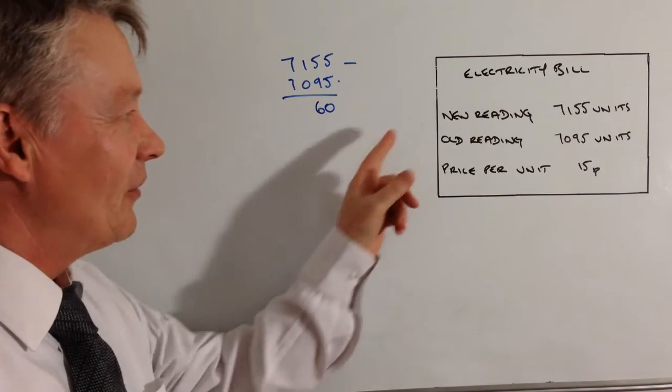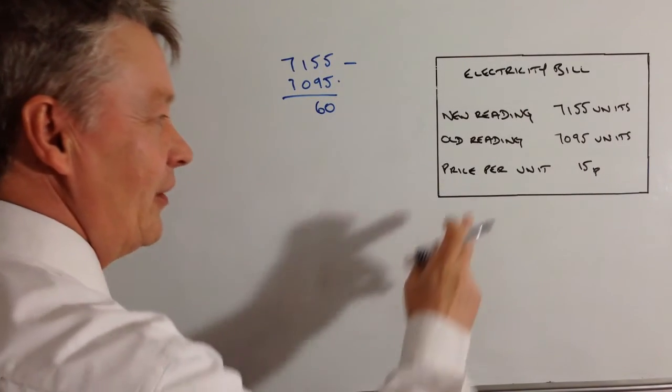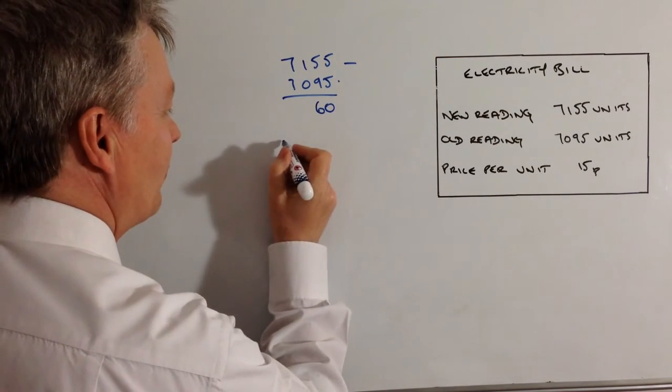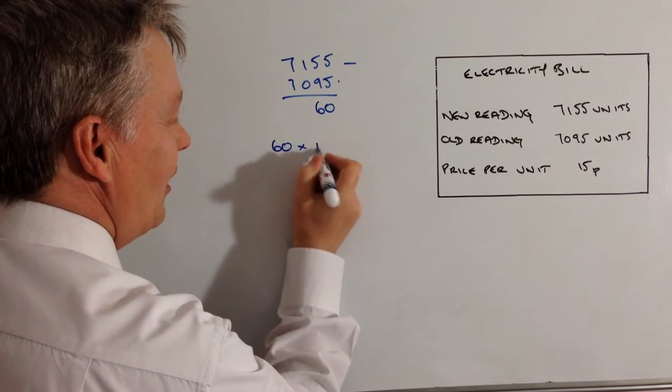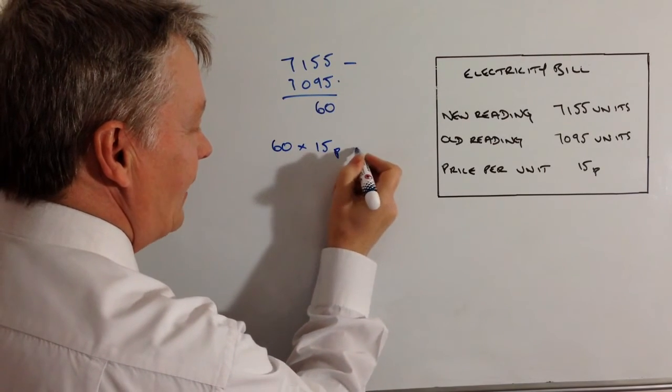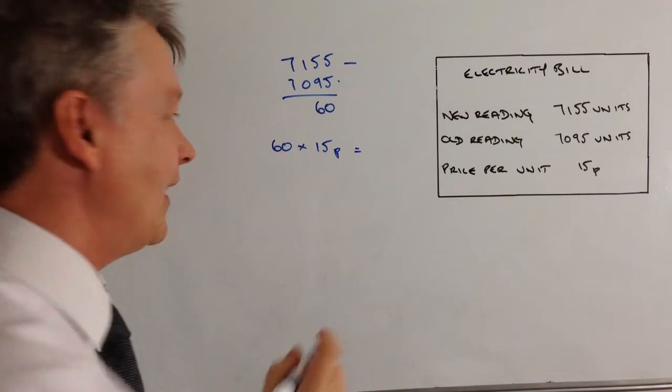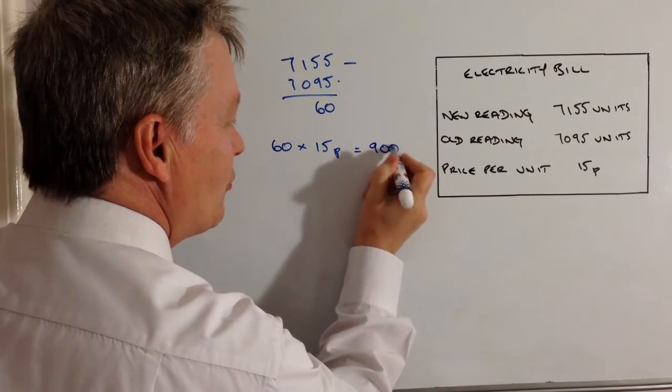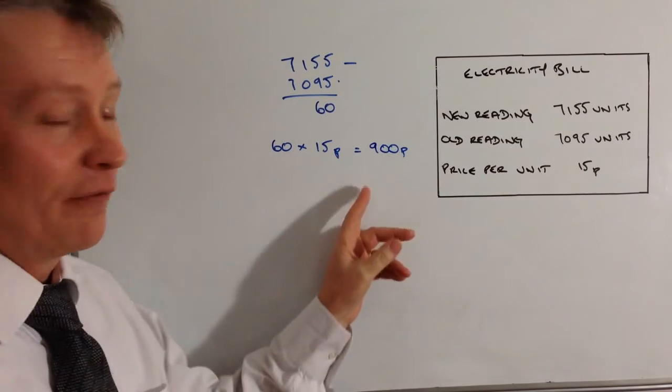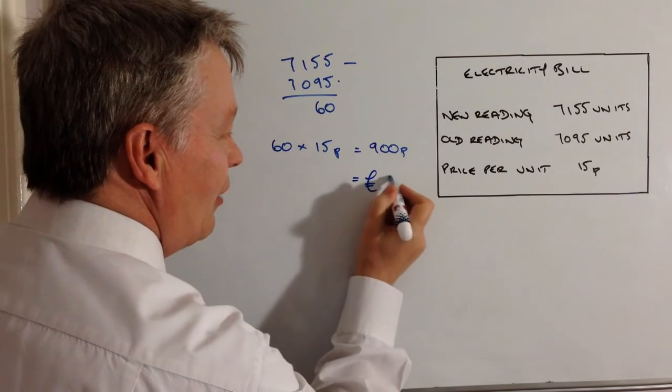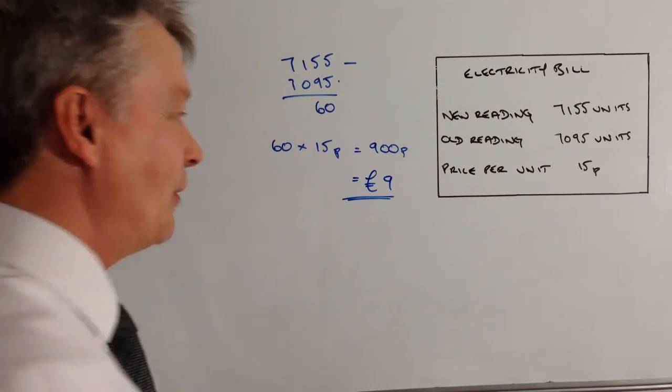Okay, so this particular person's used 60 units and the price per unit is 15 pence. So all we're going to do is multiply 60 times 15 pence. Now that's going to give us the equivalent in pennies, which is 900 pennies and we need to convert that through to pounds because the question usually will ask for a pound answer of nine pounds.